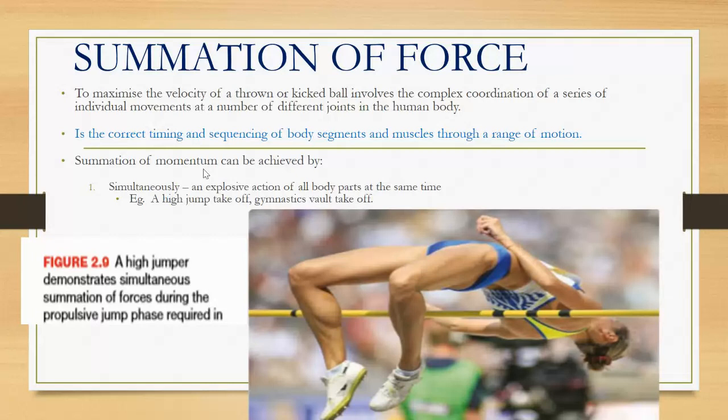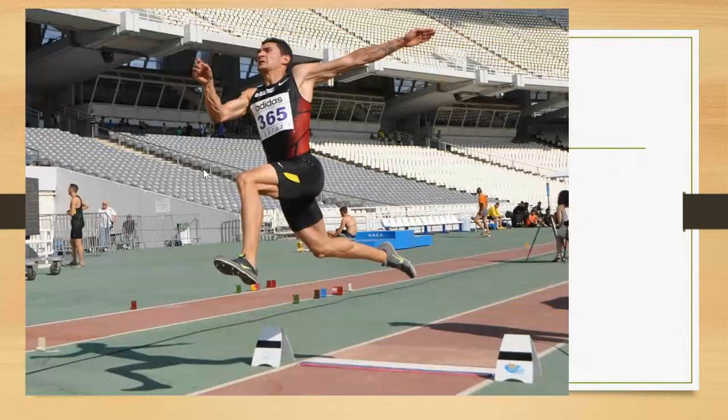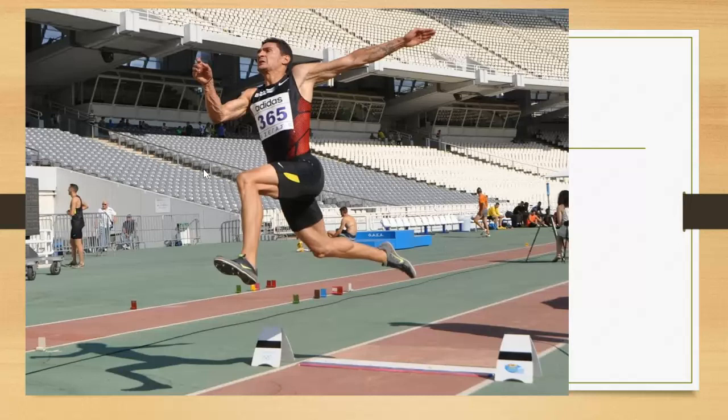That allows them to generate maximum force. The summation of force will be greater through their whole body rather than just through their legs. Long jump is another example of simultaneous force, the summation of force simultaneously.